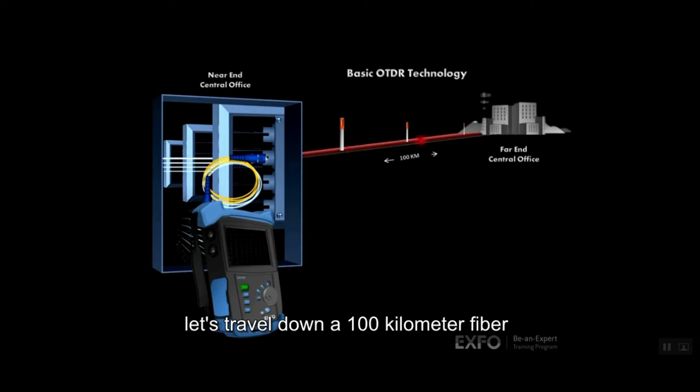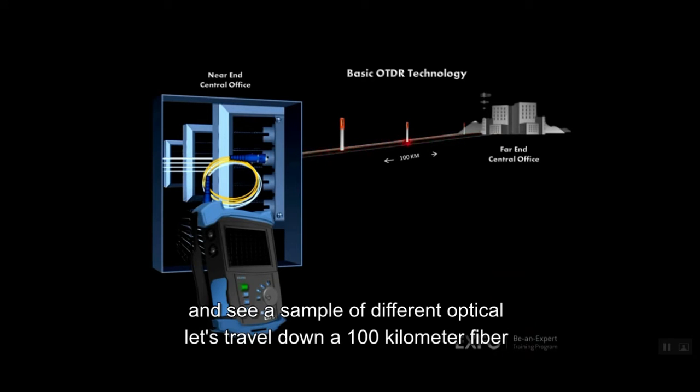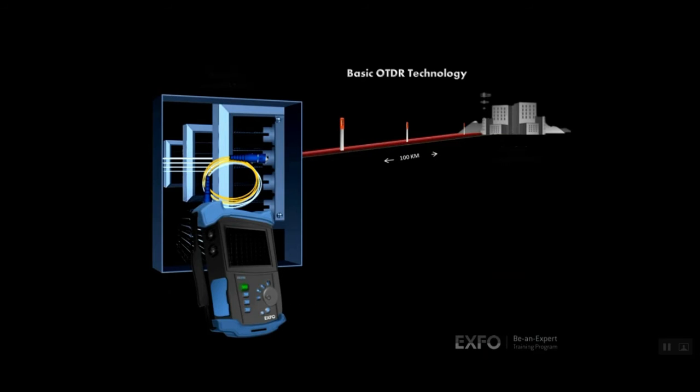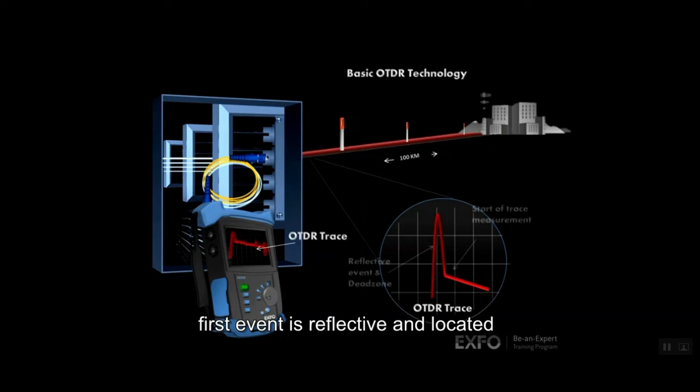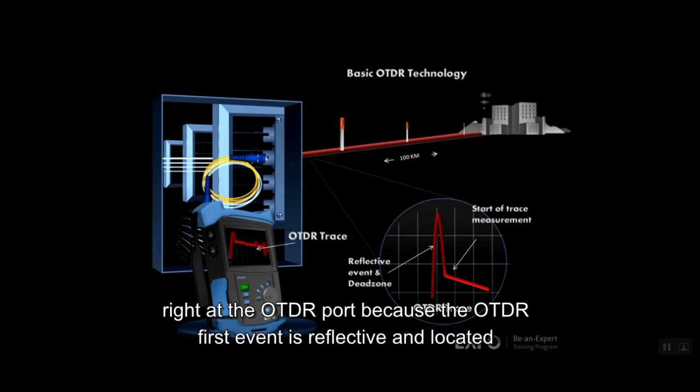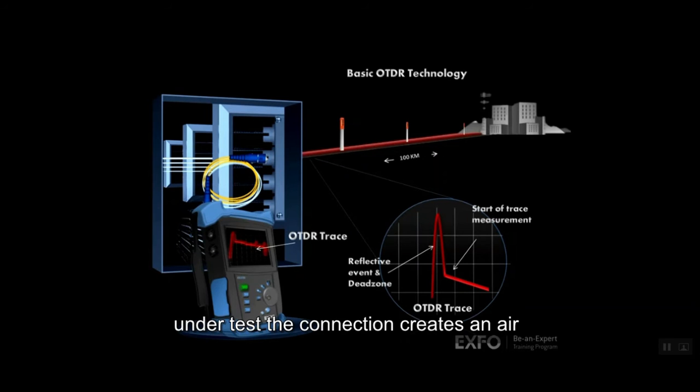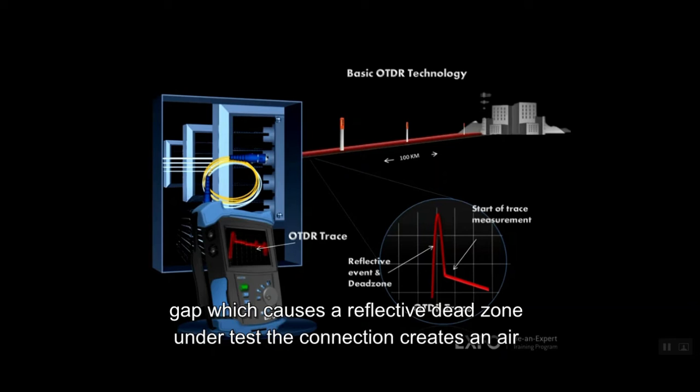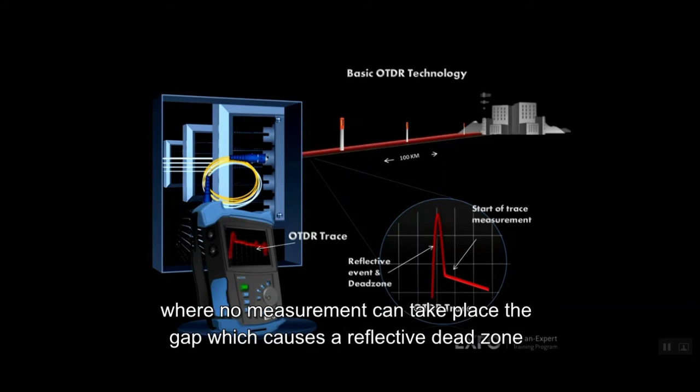Let's travel down a 100 kilometer fiber and see a sample of different optical events that the OTDR can detect. The first event is reflective and located right at the OTDR port. Because the OTDR is mechanically connected to the fiber under test, the connection creates an air gap which causes a reflective dead zone where no measurement can take place.